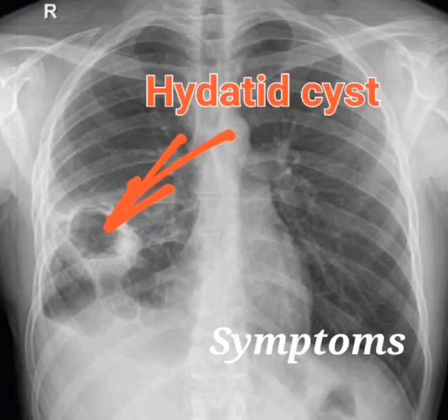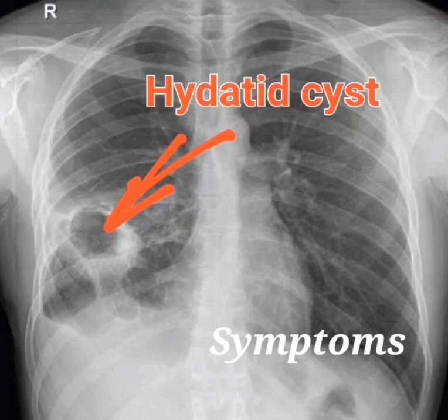If a hydatid cyst ruptures, it can cause more serious symptoms, such as anaphylactic shock, sepsis, pleural effusion (fluid buildup in the space between the lungs and the chest wall), empyema (pus buildup in the pleural space), and hydropneumothorax — accumulation of fluid and air in the pleural space.